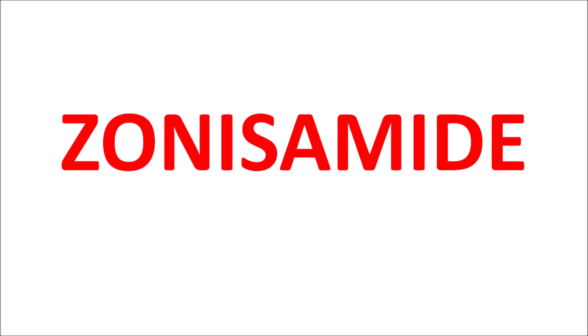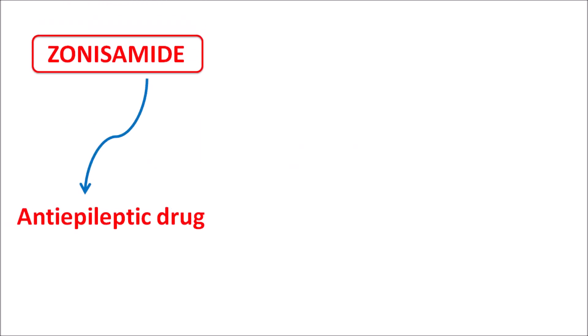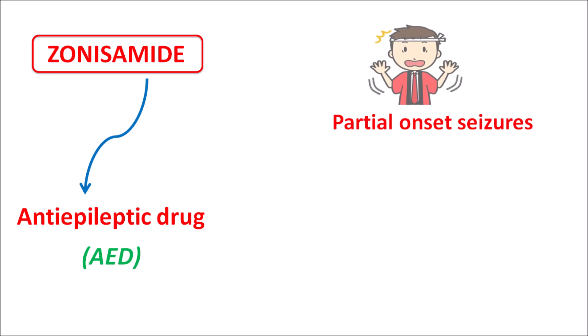Today in this video let us discuss zonisamide. Zonisamide is one of the anti-epileptic drugs, commonly known as AED. Particularly, zonisamide is one of the atypical anti-epileptic drugs that acts by multiple mechanisms, and this drug can be used as an adjuvant in the partial onset seizures. Structurally, this drug is a sulfonamide, so it can produce some allergic reactions, but because of its multiple mechanisms of action, this drug can be used in the management of partial onset seizures.